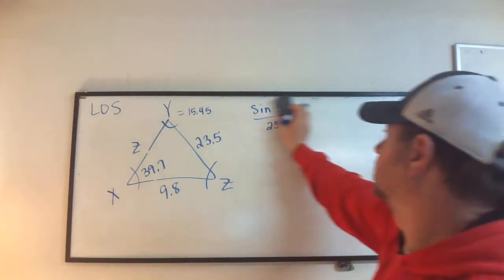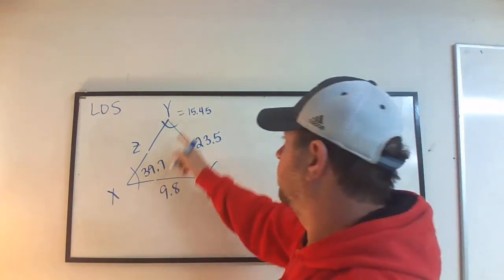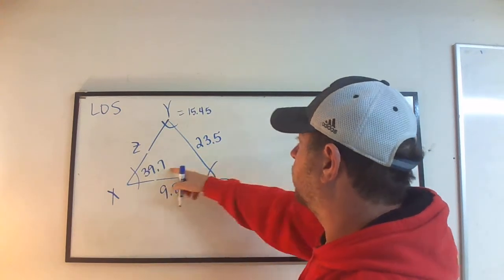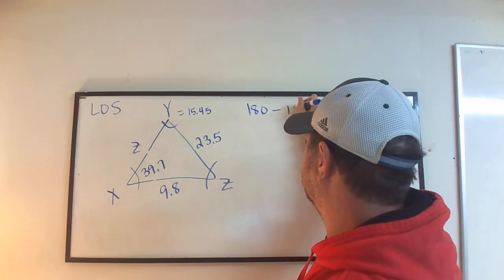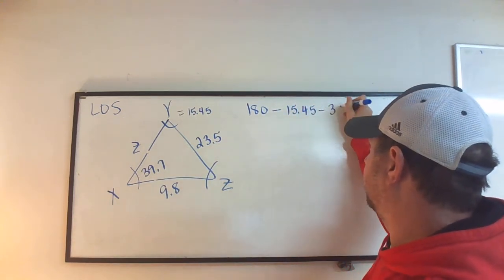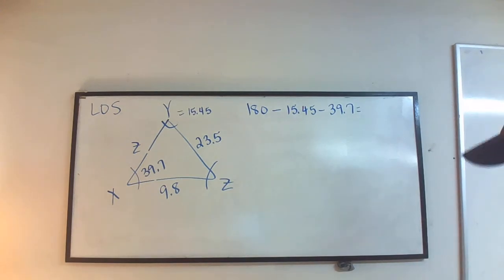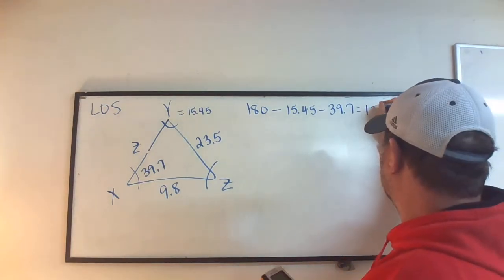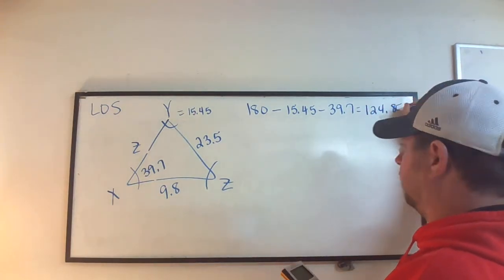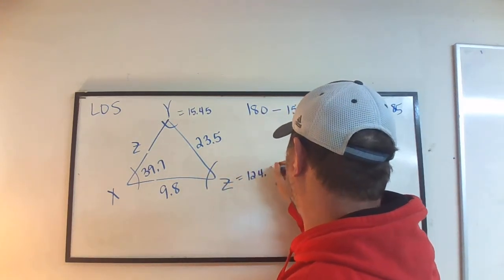Now let's find angle Z and side z. Since we know two angles, we compute 180 minus 15.45 minus 39.7, which gives 124.85°. So angle Z equals 124.85°. The picture is not drawn to scale, but the math is correct.